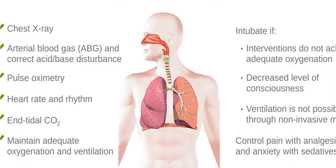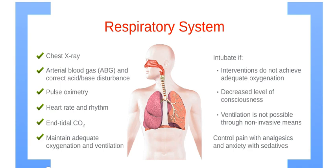The first system we will be covering is the respiratory system. Check arterial blood gas and correct possible acid-base disturbances. Continuously monitor pulse oximetry, as well as heart rate and rhythm. For non-intubated patients, watch for signs of deterioration that may indicate intubation is necessary, or for signs that intubation is required to protect the airway. Monitor end-tidal CO2 if the victim is intubated to assure adequate oxygenation and ventilation. Pain should be controlled with analgesics and anxiety with sedatives as necessary.